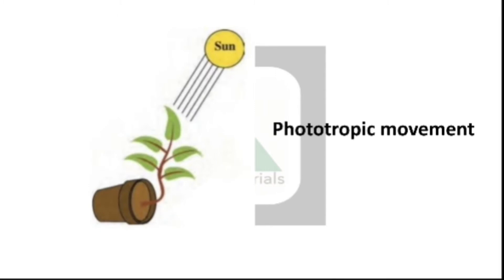Next one. Now the leaves are moving and directed towards the sun. The pot has been placed and the plant has also oriented in that direction — it's attracted and directed towards the rays of the sun. So it's a phototropic movement.